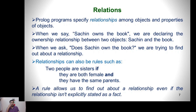We can specify relationships using formal rules. For example, the relationship of being a sister: two people are sisters if they both are female and they have the same parents. A rule allows us to find out about a relationship even if the relationship is not explicitly stated as a fact. So 'Sachin owned the book' is an explicit relationship — a fact — while the sister rule defines an implicit relationship, and an implicit relationship is called a rule.